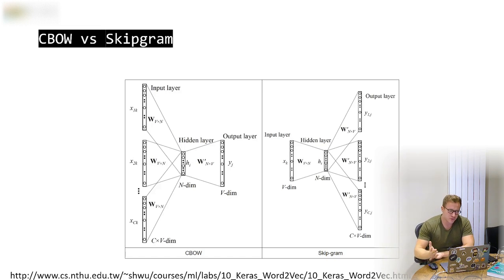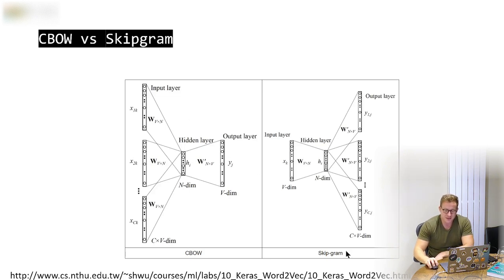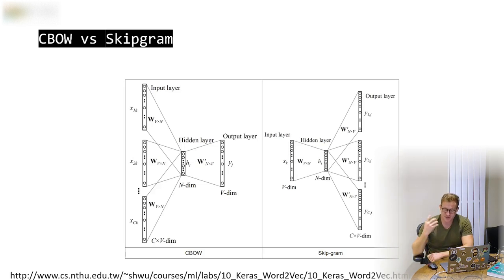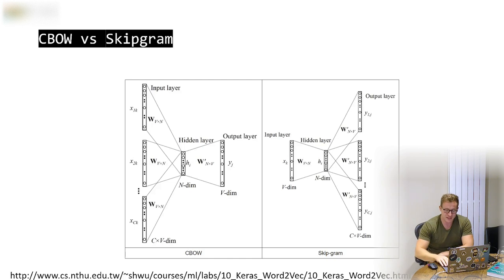CBOW versus SkipGram is literally a mirror image. In CBOW we predict the word based on the context; in SkipGram we predict the context based on the word. But the result is basically the same. In both cases it's possible to use one of the internal weight matrices to project out effective word vectors for every single word in the vocabulary.